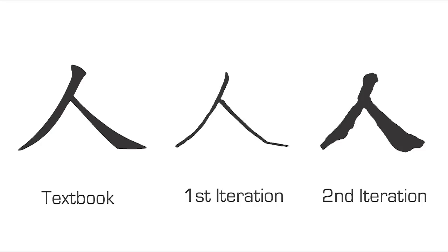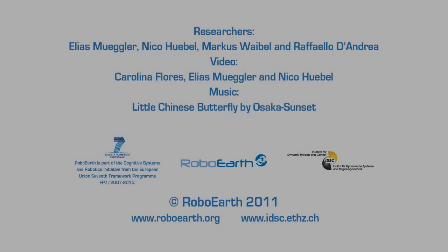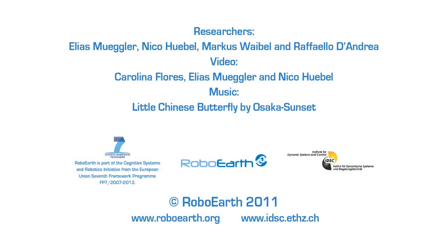In the end, the learning node compares this picture with the reference from a textbook also stored in the database, and improves the prior in the database for the next iteration.